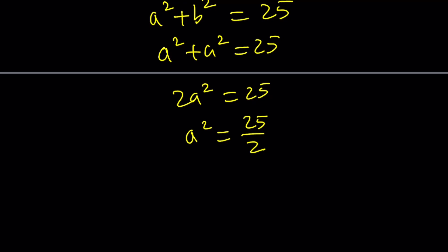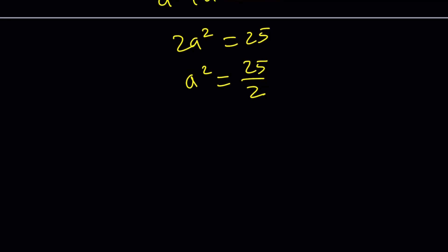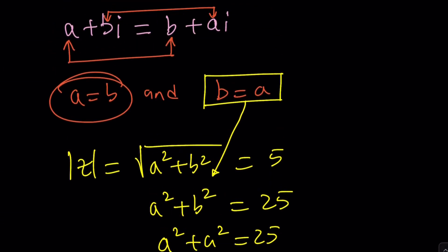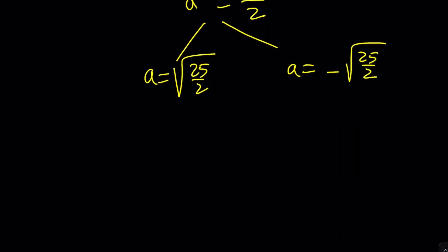We want to get the value of a from here, but there are two values. Remember, there are two numbers whose square equals 25 over 2: square root of 25 over 2 and its opposite. Does that mean there are two b values? Yes, because a equals b, so whatever a is, b is going to be the same. Let's just find a in the simplest form and then use that to find b.